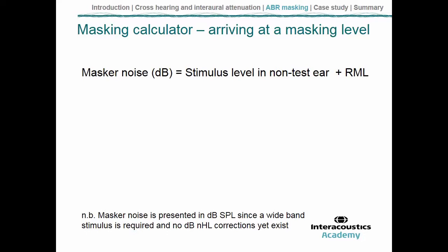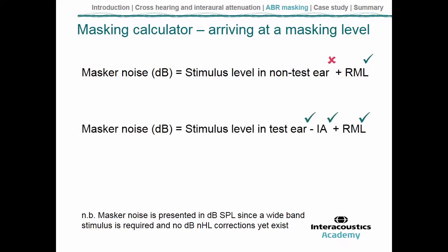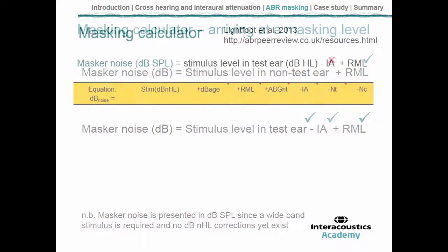There is a problem with this simple equation: there's no actual way to directly know what the stimulus level in the non-test ear actually is. Instead, we have to calculate it. We know what the stimulus level was in the test ear, and we know from studies such as the Munro and Agnew study what the interaural attenuation is. So if we take the stimulus level in the test ear and subtract the interaural attenuation, we know what the stimulus must have been in the non-test ear.